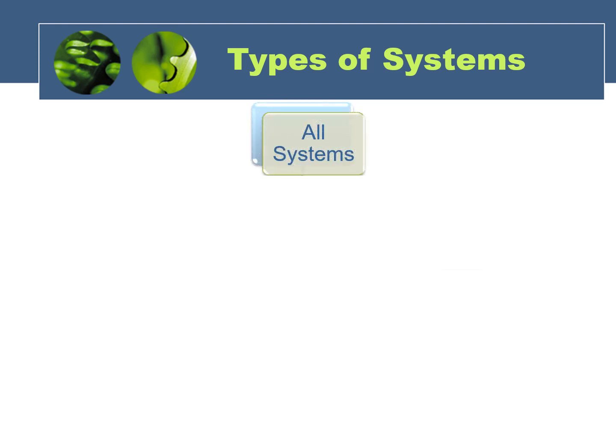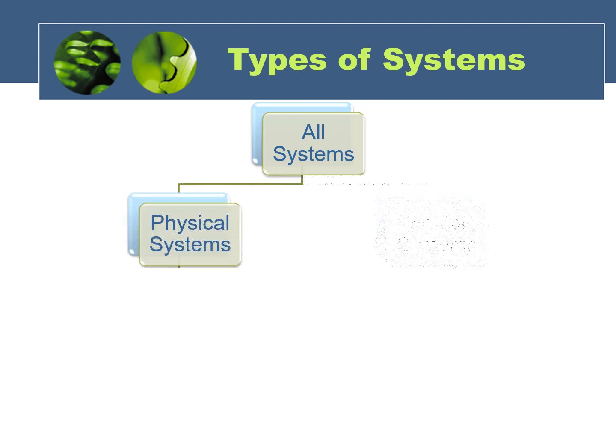To make it easier for you to understand and remember all the different types of systems, we can sort or classify them using a tree diagram. The category at the top of the diagram contains all of the systems that have ever or will ever exist. We can divide all of these systems into two subcategories: physical systems and social systems.